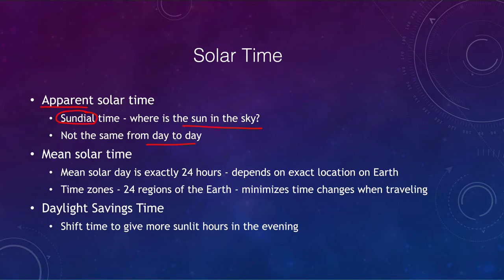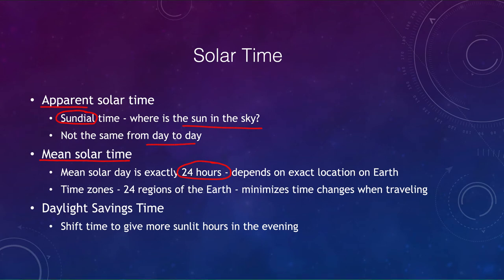The sun might reach its highest point at a certain time, but a little later in the year it might reach that highest point 15 or 20 minutes later. That's because the orbit of the earth around the sun is not uniform. Since we don't want days that vary, we use mean solar time. The mean solar day is exactly 24 hours, and that is what we use as our ordinary day.